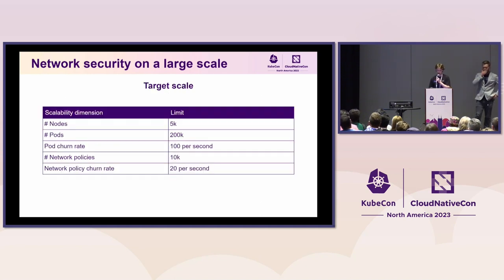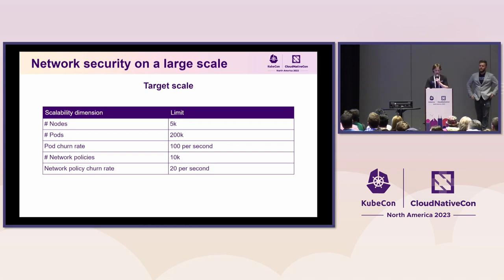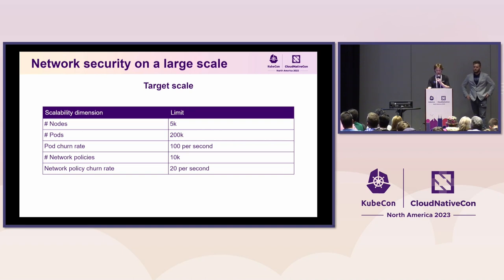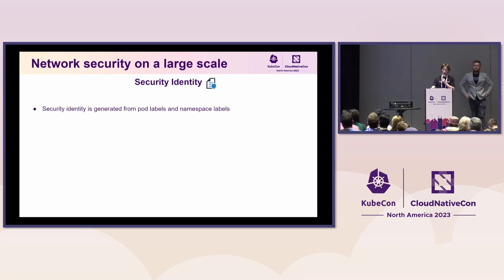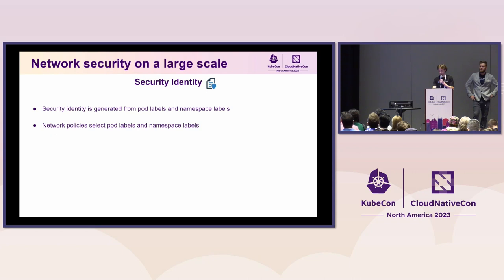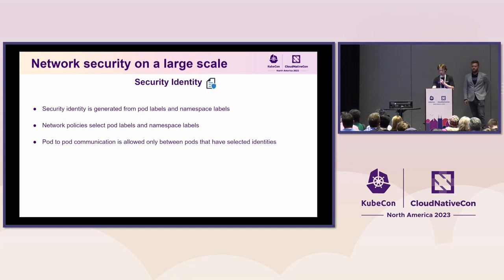As Marcel mentioned, there are a number of scalability dimensions we care about. In this case, we want to support up to 5,000 nodes, 200,000 pods, 100 pod changes per second, up to 10,000 network policies, and 20 changes to network policies per second. Security identity is generated from pod labels and namespace labels. Network policies select these same labels, and then pod-to-pod communication is allowed only between pods that have selected identities.